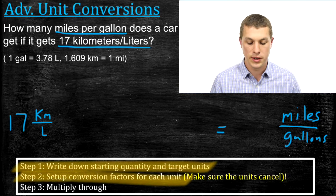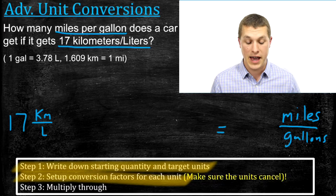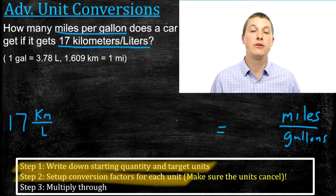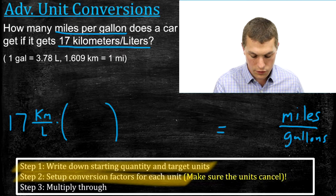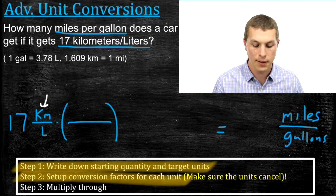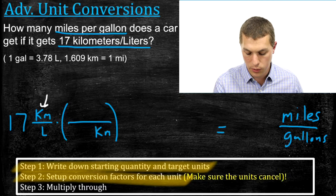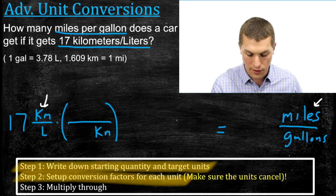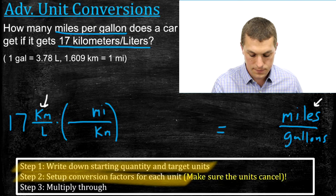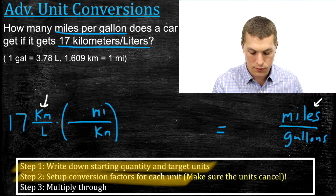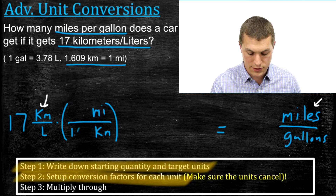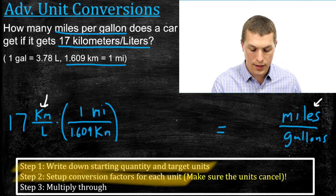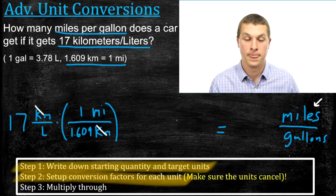Step two says set up conversion factors for each unit, just like other unit conversion problems, but now we use multiple conversion factors because we're dealing with multiple units. First let's do the kilometers. Since kilometers are on top in our starting units, we write them on the bottom of our conversion factor to cancel them, and write miles on top. We know that 1.609 kilometers equals one mile, so we write 1.609 next to kilometers and one next to miles. Kilometers cancel out and we're left with miles — that's half the conversion.